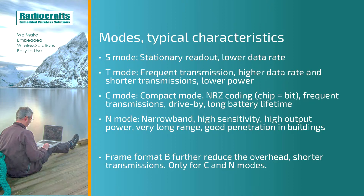Then came the N mode, which is a narrowband mode with higher sensitivity and also higher output power in the 169 MHz band. It has very long range and very good penetration in buildings, making it suitable for meters installed deep inside buildings, in basements, or even in pits.